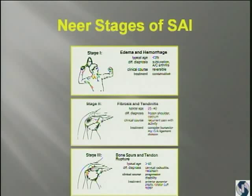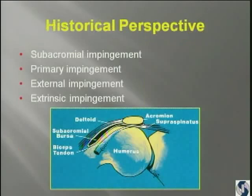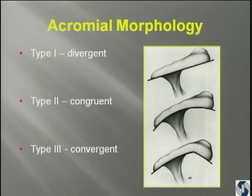Neer gave us the stages: stage one in younger patients, stage two a little bit older, and then over the age of 40, those are the patients in stage three. We learned the types — actually, this was never published in a journal. It was published as an abstract, but never in a peer-reviewed journal.